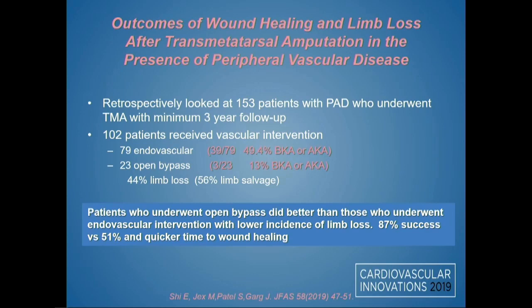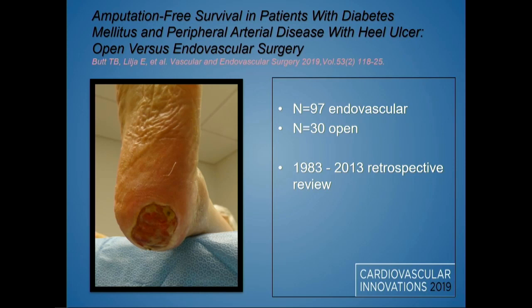We do have to look at outcomes. A recent study on the timing of arterial revascularization around transmetatarsal amputations found retrospectively that it didn't matter whether the procedure happened before or after the TMA. However, they did find that when comparing endovascular versus open procedures after TMAs, nearly 50% of endovascular approach procedures progressed to higher-level amputations, compared to only 13% with open procedures. They concluded there was more success with open versus percutaneous or endovascular approaches.